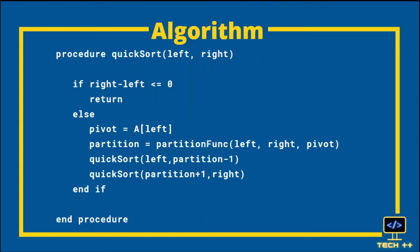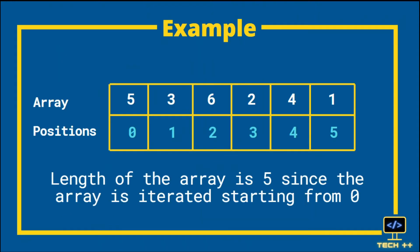This is how the divide and conquer approach works in the Quicksort algorithm. Let's take an example of an array consisting of elements 5, 3, 6, 2, 4, and 1. Here, the length of the array will be 5 since the array is iterated from 0.